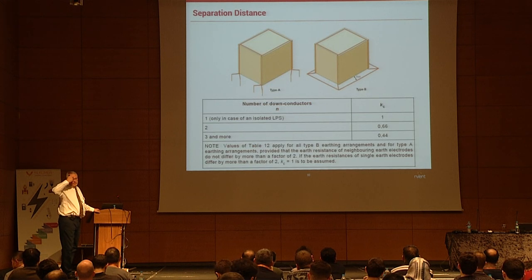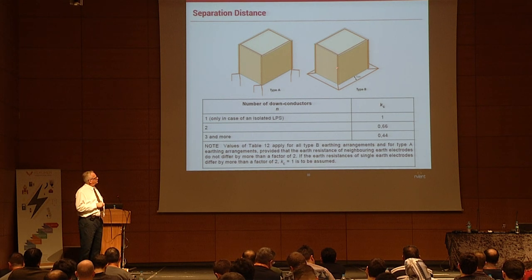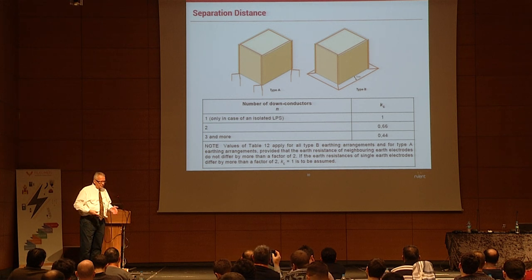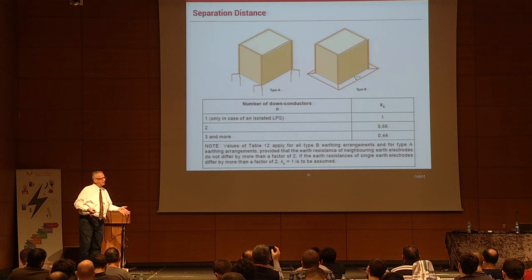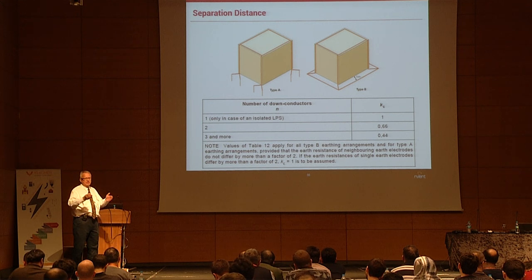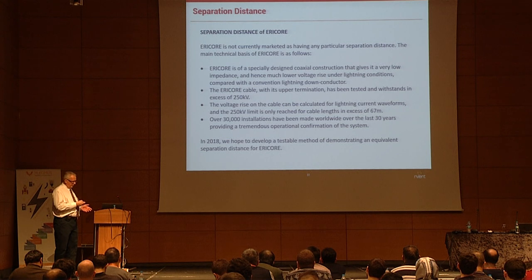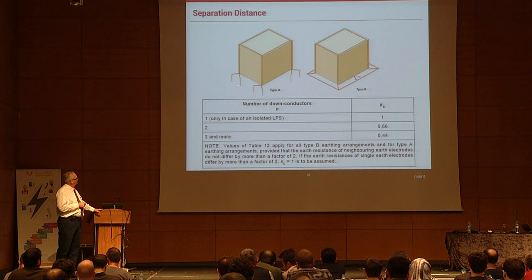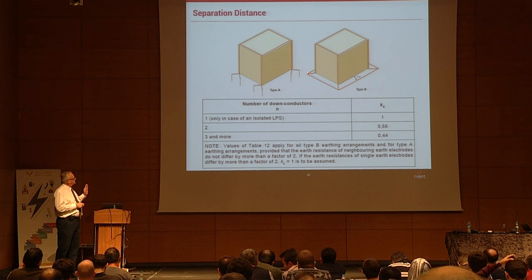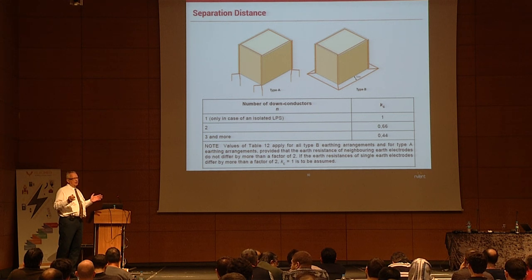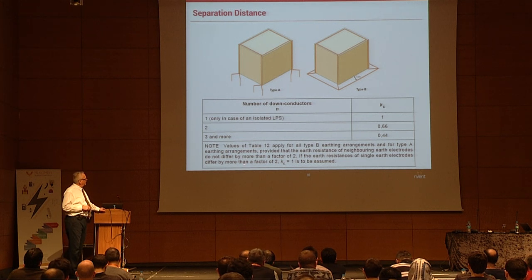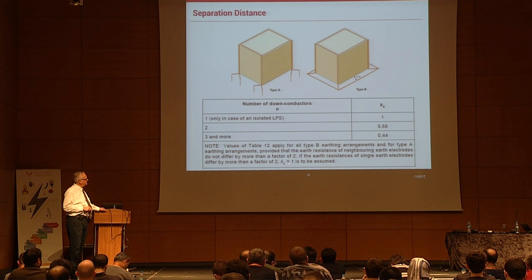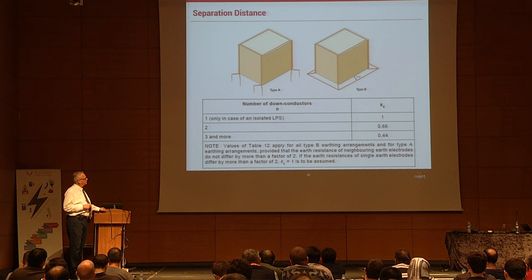Another important aspect is the grounding system. A ring ground around the building foundation creates an equipotential system with pretty much the same resistance wherever you measure. With four separate independent grounding systems — one for each down conductor — if the systems are within a factor of two from each other in resistance, you're okay. If not, you must assume Kc equals one. If there's a factor-of-two difference between individual grounding systems, you have to change Kc to one.